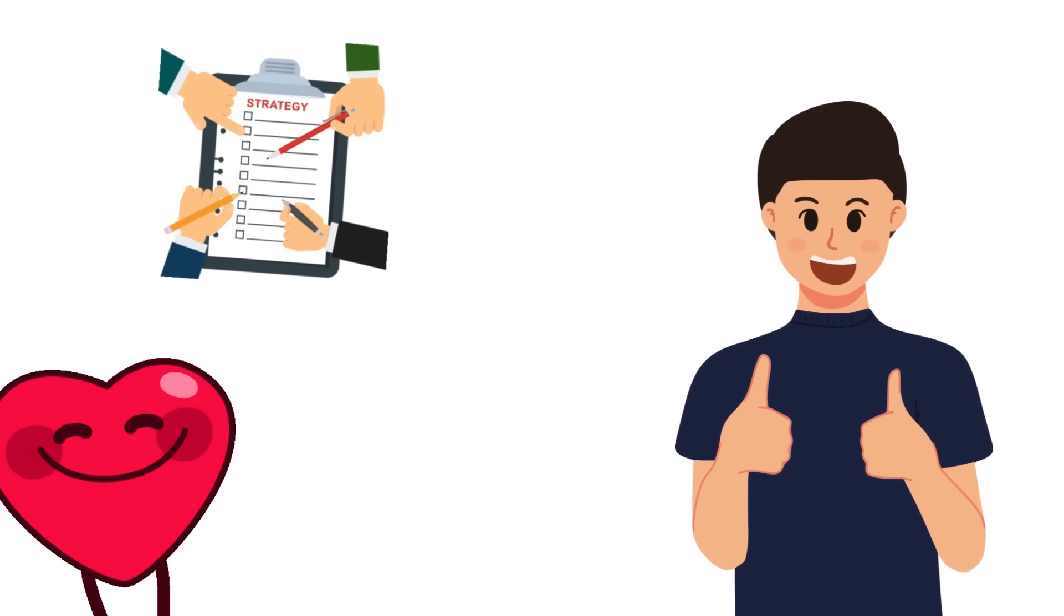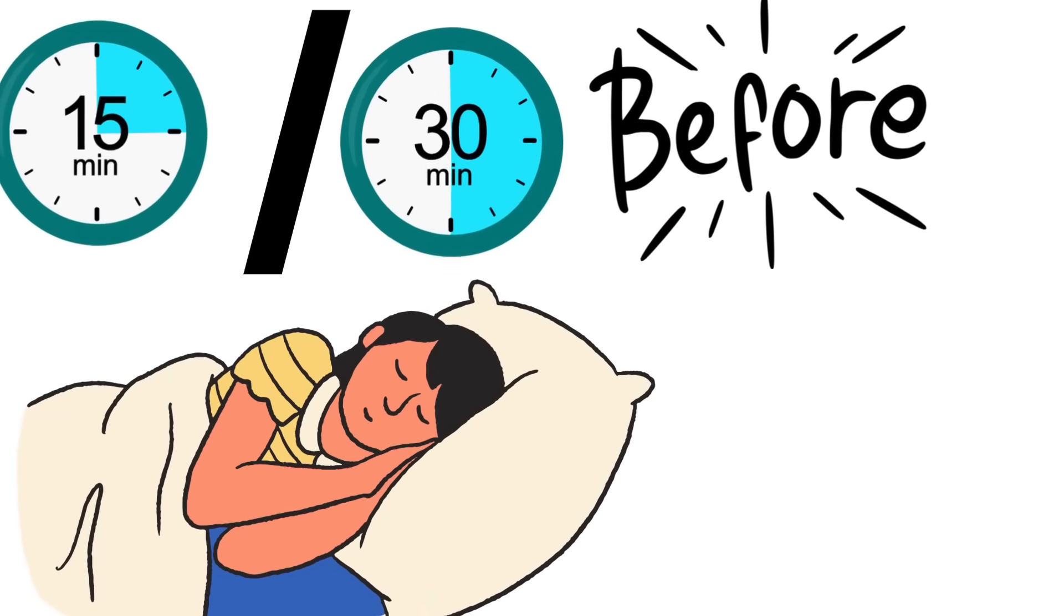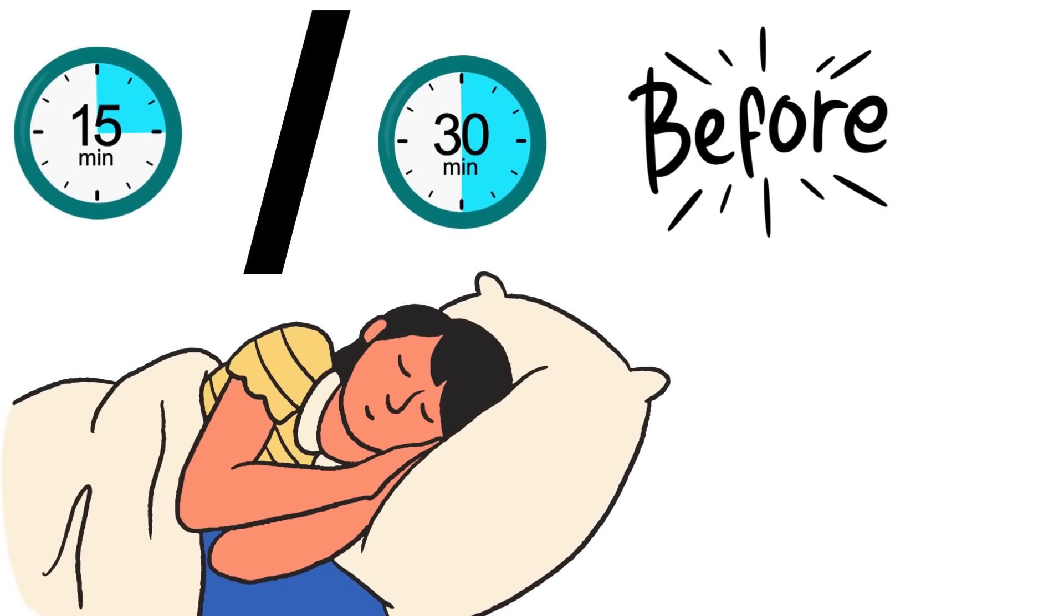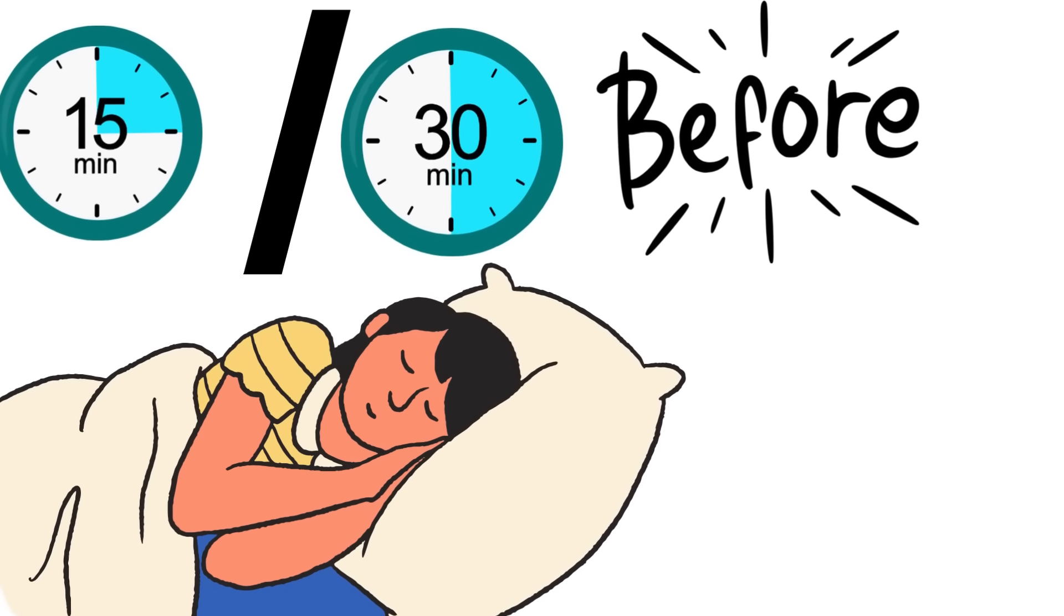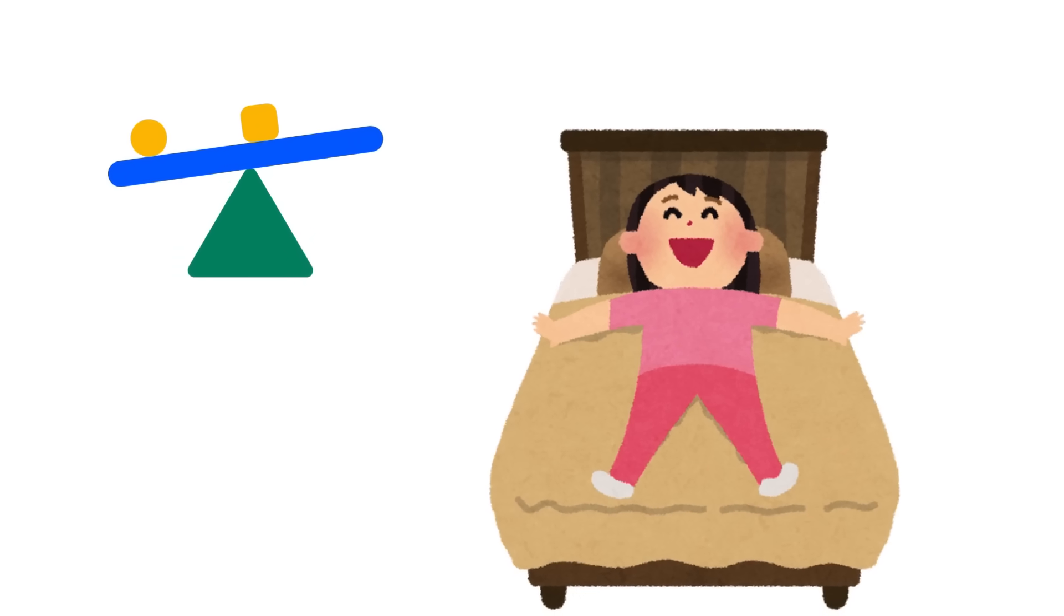Embrace your chronotype, but make small adjustments. Instead of fighting your natural tendencies, try gradually shifting your sleep schedule by 15 to 30 minutes earlier each week. This can help you find a better balance between your body's needs and societal demands.